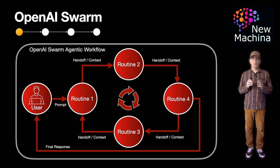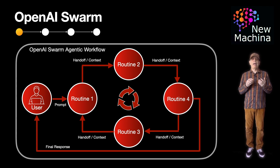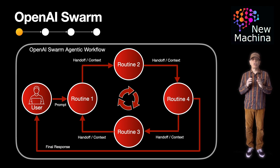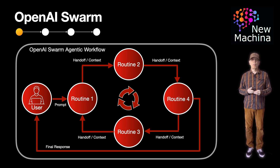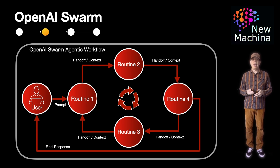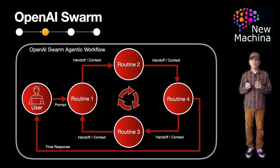Swarm is all about building multi-agent systems. Instead of one big agent doing everything, Swarm lets you build a team of smaller agents. Each one has its own job and can pass work to others when needed. In Swarm, each agent is defined with a name, a set of tools, and an optional routine. When the agent is activated, Swarm reads the routine, executes steps in that order, and makes decisions or calls tools as needed.